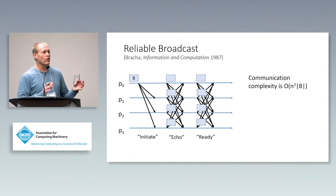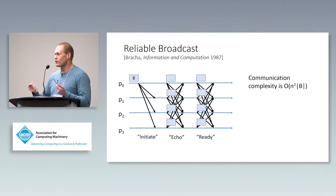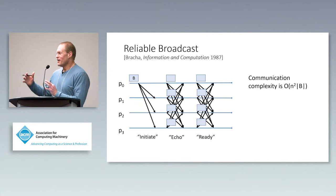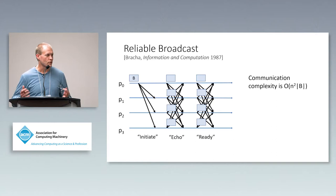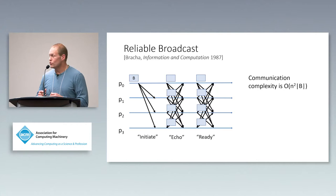Traditionally these protocols were developed for small replica ensembles — maybe four or seven replicas. Today everybody thinks in terms of permissioned blockchains, where n might be 100 or 200. At that scale, O(n² · |B|) communication becomes a serious problem, motivating us to look for alternatives to this reliable broadcast primitive.